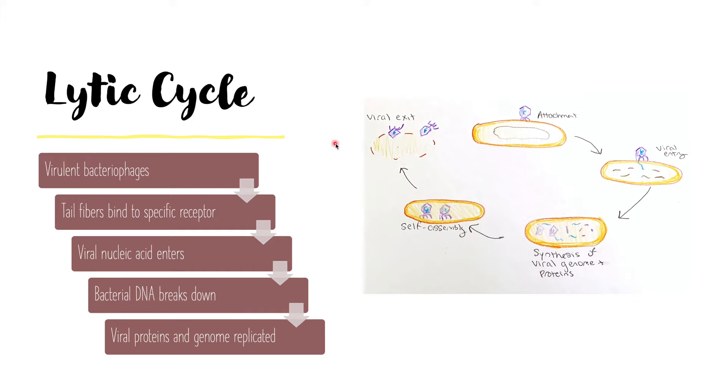In the lytic cycle, virus replication results in the bursting or lysis of the host cell. First, the bacteriophage attaches to the host cell using its tail fibers that bind to a specific receptor on the bacterial surface.